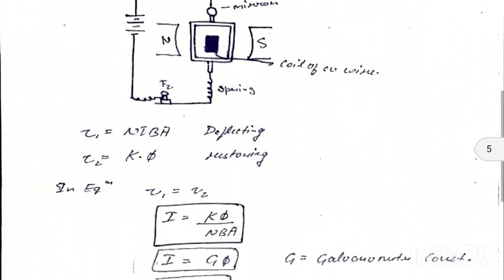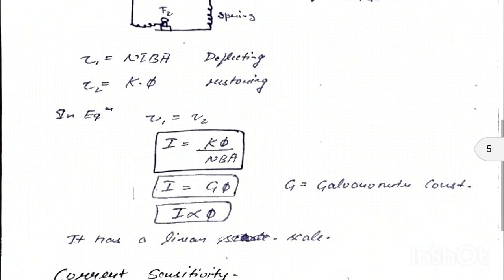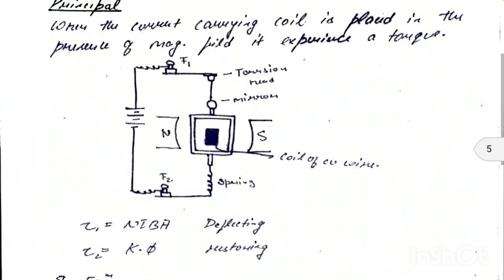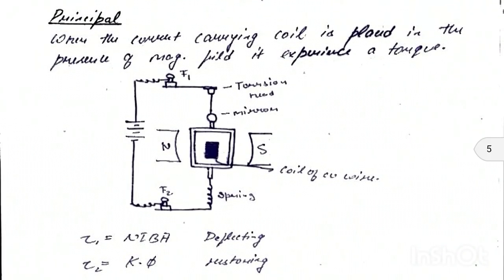Construction: the galvanometer consists of a rectangular coil with a large number of insulated copper wires, placed between two poles of a strong electromagnet. The coil is suspended by a wire made of phosphorus or bronze material, connected to the torsion head connected to terminal T1 on the upper side.